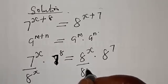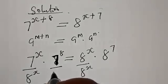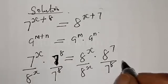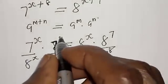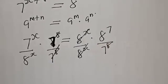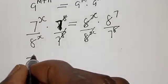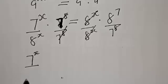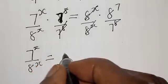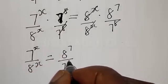Then let's divide both sides by 8 raised to power x and by 7 raised to power 8. We have 7 raised to power x over 8 raised to power x is equal to 8 raised to power 7 over 7 raised to power 8.